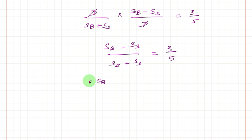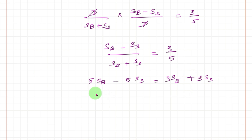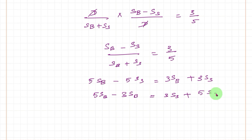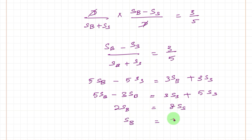By cross multiplication: 5 times (SB minus SS) equals 3 times (SB plus SS), which gives 5SB minus 5SS equals 3SB plus 3SS. Rearranging: 2 times speed of the boat equals 8 times speed of the stream, so speed of the boat equals 4 times speed of the stream. This is the first key equation.